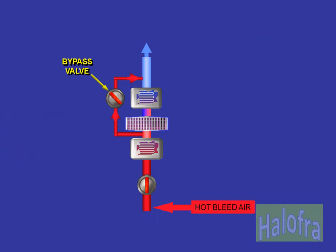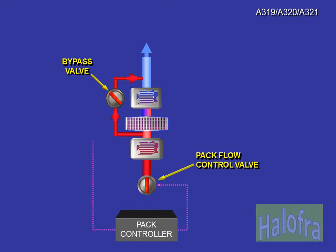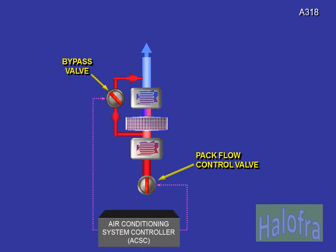So that the output temperature of the pack can be adjusted, a bypass valve is fitted to allow warmer air to be mixed with the cold air. On the A319, A320, and A321, the pack flow control valve and the bypass valve are regulated by a pack controller to vary the flow rate and temperature output. On the A318, the pack flow control valve and the bypass valve are regulated by the air conditioning system controller, ACSC, to vary the flow rate and temperature output.